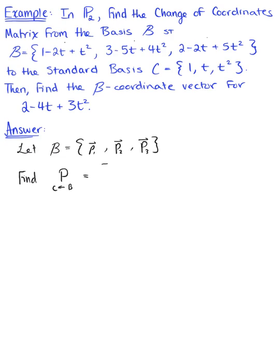We know that this matrix is defined by column vectors where we have the coordinates of vector p sub 1 relative to C, the coordinates of vector p sub 2 relative to C, and the coordinates of vector p sub 3 relative to basis C.